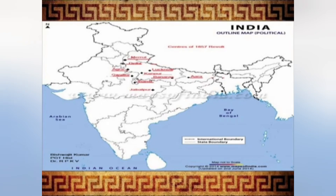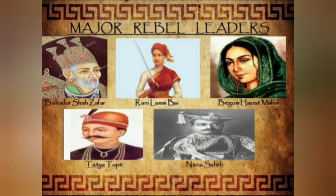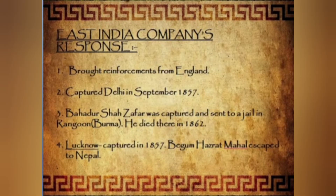Lucknow was the capital of Awadh. There the mutinous sepoys were joined by disbanded soldiers from the old Awadh army. Begum Hazrat Mahal, one of the Begums of the ex-king of Awadh, took up the leadership of the revolt. Finally, the British forces captured Lucknow, and the queen escaped to Nepal.